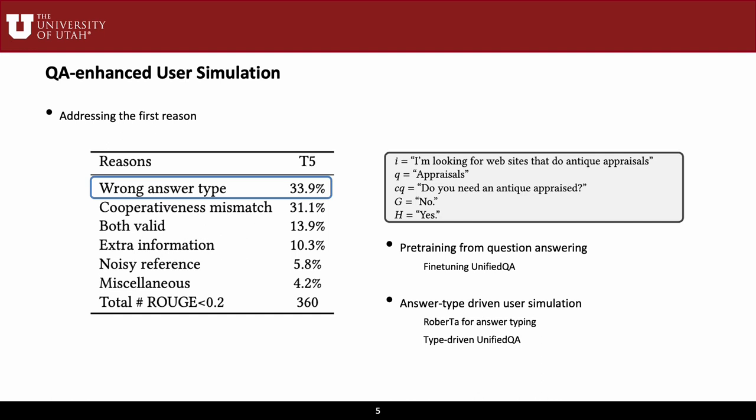The most common reason is generating the wrong answer type. Sometimes T5 fails to realize that the clarifying question and the search intent have the same meaning. To address this, we leveraged the similarity between user simulation and the question-answering task, which is never mentioned by previous approaches. We proposed that a pre-trained question-answering model and an extra answer typing step could improve the generation quality.